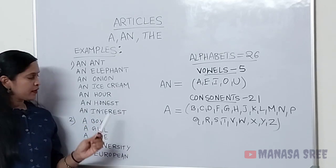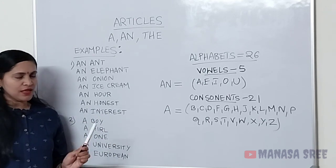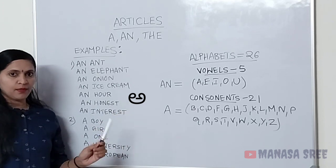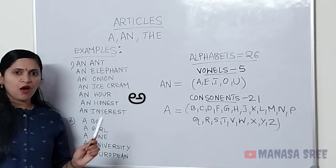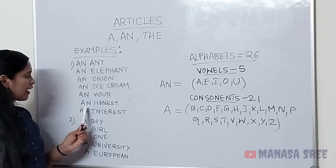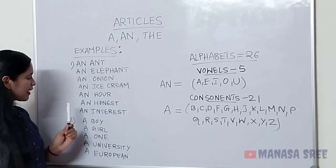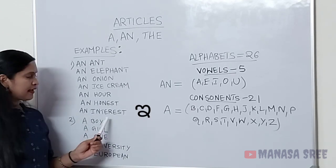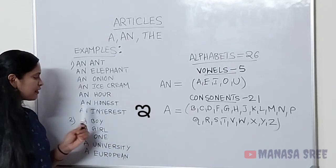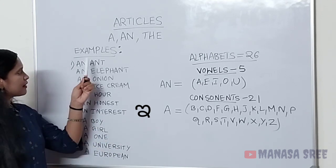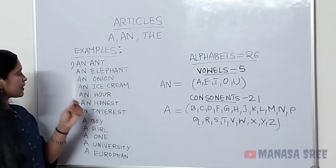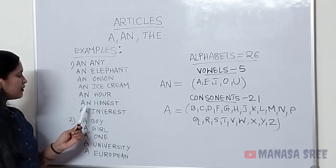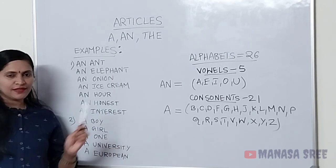An honest — 'h' is silent. H is a consonant letter, but sound naamke vowel sound bandhi dhe — 'a' honest — so 'an' article na use maatthi vi. An honest. An interest — 'e' sound bandhi dhe — nodhi friends — an interest. So adhik e nao 'an' article na use maatthi vi. Summary: an and, an elephant, an onion, an ice cream, an hour, an honest, an interest.